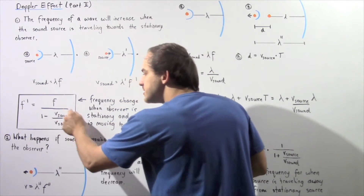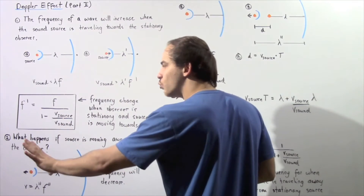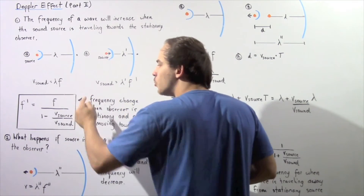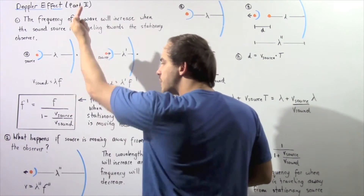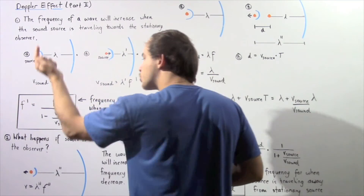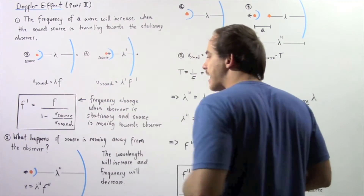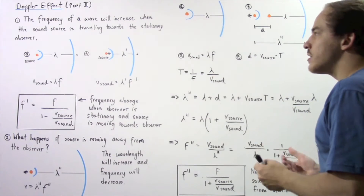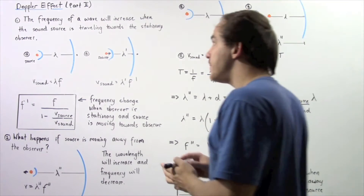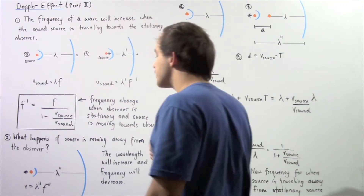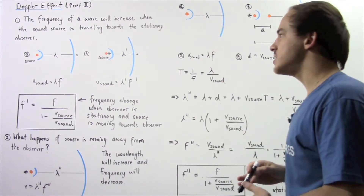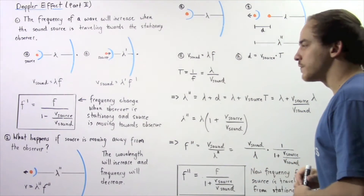Because this fraction (V source divided by V sound) is less than 1, the denominator is less than 1, meaning this entire term will be greater. So F prime is greater than F. Now, what about the opposite case — what happens if the sound source is moving away from the stationary observer?